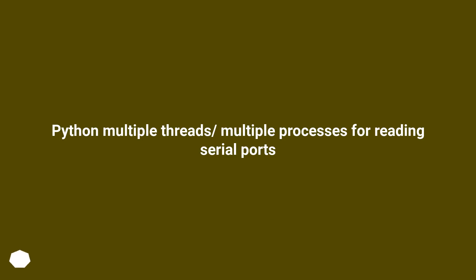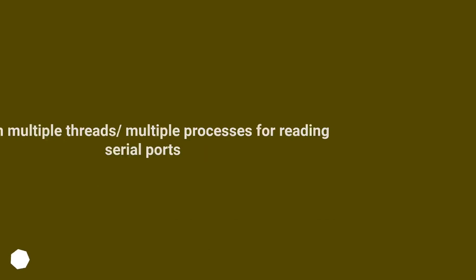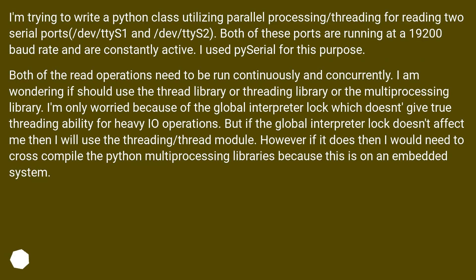I'm trying to write a Python class utilizing parallel processing and threading for reading two serial ports, /dev/tz1 and /dev/tz2. Both of these ports are running at a 19200 baud rate and are constantly active. Both of the read operations need to be run continuously and concurrently.